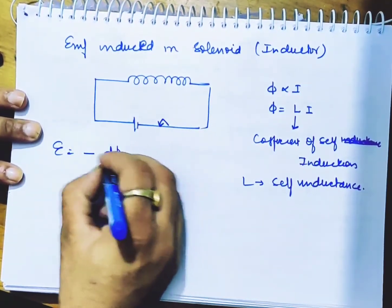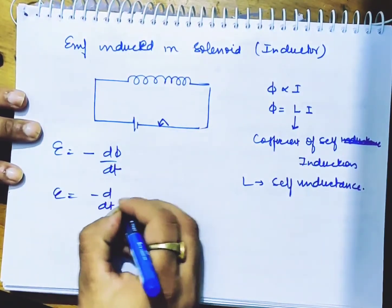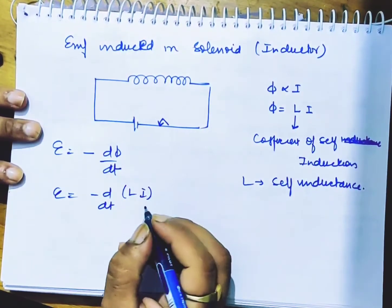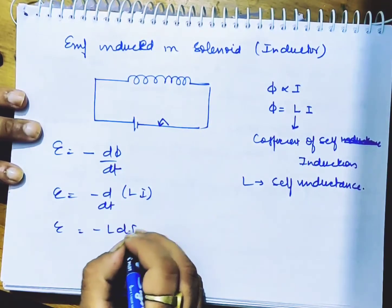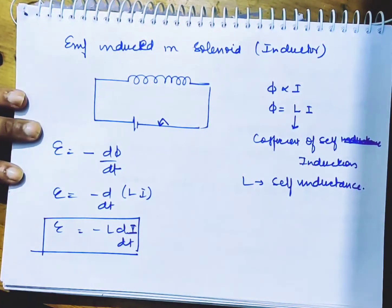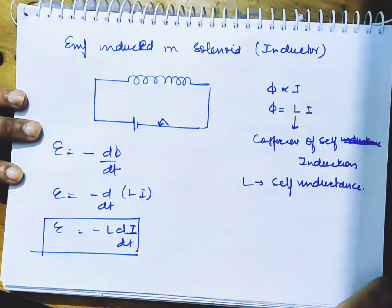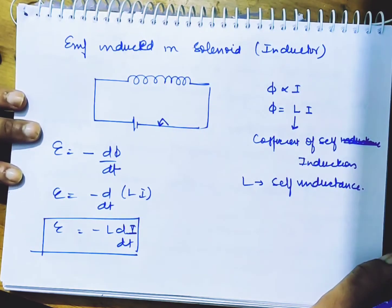now let's find out what is the EMF generated. What is -dφ/dt? -d/dt of Li. So we have ε = -L di/dt, a very important expression which you must literally memorize. EMF in an inductor is -L di/dt. Very important.